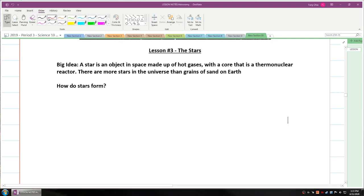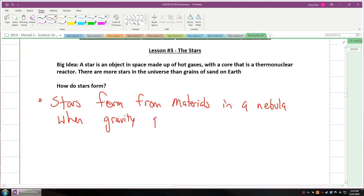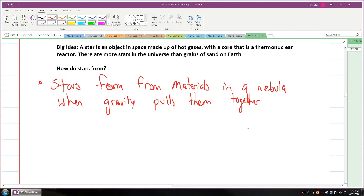Stars form from materials in a nebula when gravity pulls them together. In the early phase when this happens, we call this a protostar.